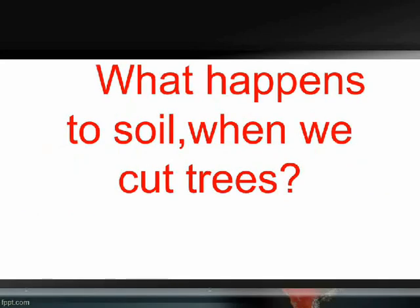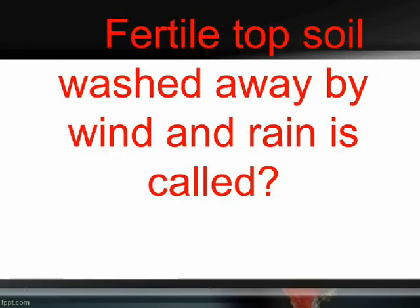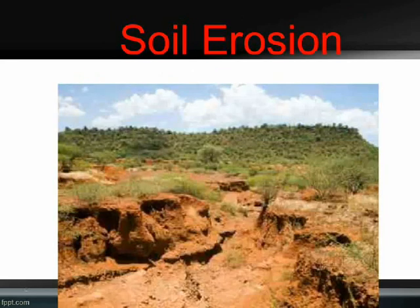What happens to soil when we cut trees? Soil becomes loose. Fertile topsoil washed away by wind and rain is called soil erosion.